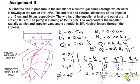The RPM of the impeller, rotational speed of the impeller, is given as 1500 RPM. So therefore you can find out u1 and u2.